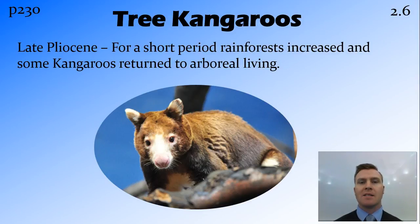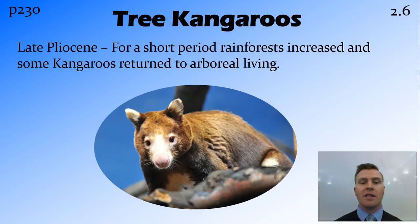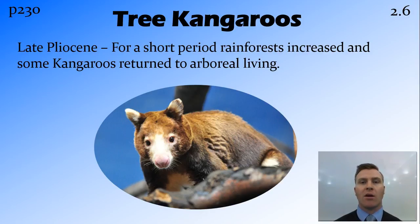In the late Pliocene there was a glacial event, and for a short period of time rainforests increased. Some kangaroos went back to living in the trees, and some of these kangaroos can still be seen today in both northern Australia and Papua New Guinea. These are the tree kangaroos, which are a little bit more modern than those original arboreal kangaroos but still around today.